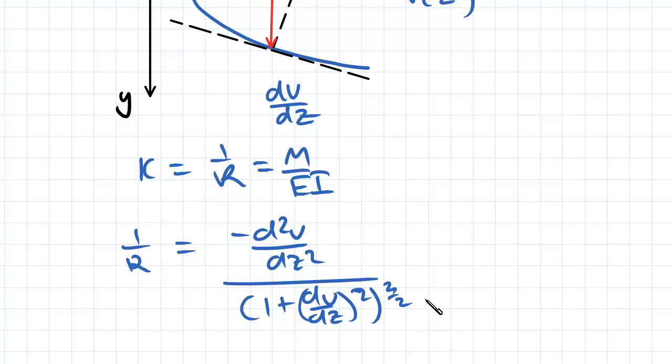So what we know is that we're assuming that our deflections are quite small. So that's one of the assumptions that we make in this topic for deflections, that we're only considering small deflections in our beam. So dv/dz is small, so what that means then is that...